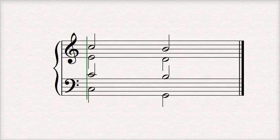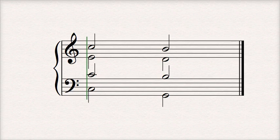One type of objectionable parallel is known as the parallel octave, which is where you have two voices that start as an octave and move in the same direction in parallel to another octave.